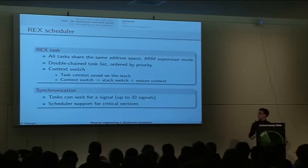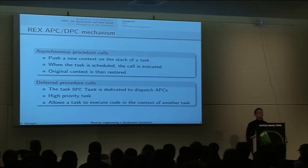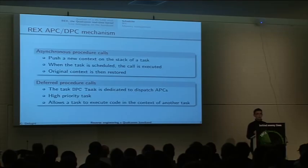The scheduler also supports critical sections. The kernel also supports APC and DPC mechanisms — I'm taking this terminology from the Windows world, but it's really called like this in the strings of the kernel. Basically it works the same way as Windows. An asynchronous procedure call is just pushing a new context on the stack of a task, and when the task is resuming because it was in a wait state, it will execute the call and then resume its original execution.